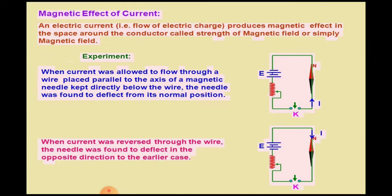Electromagnetism is the study of the magnetic effect of current. The use of electromagnetism is different in different fields of science and technology. Motors and electric meters are based on the effect of magnetism produced by electric current in wires. Generators, both AC and DC, basically work on the principle of electromagnetism.